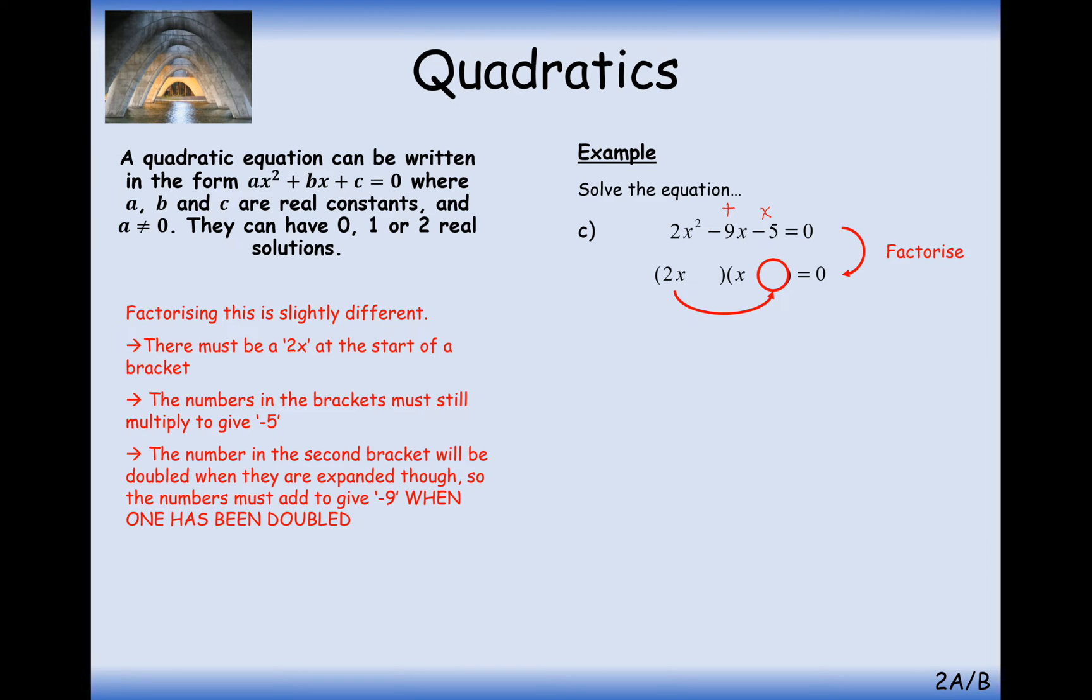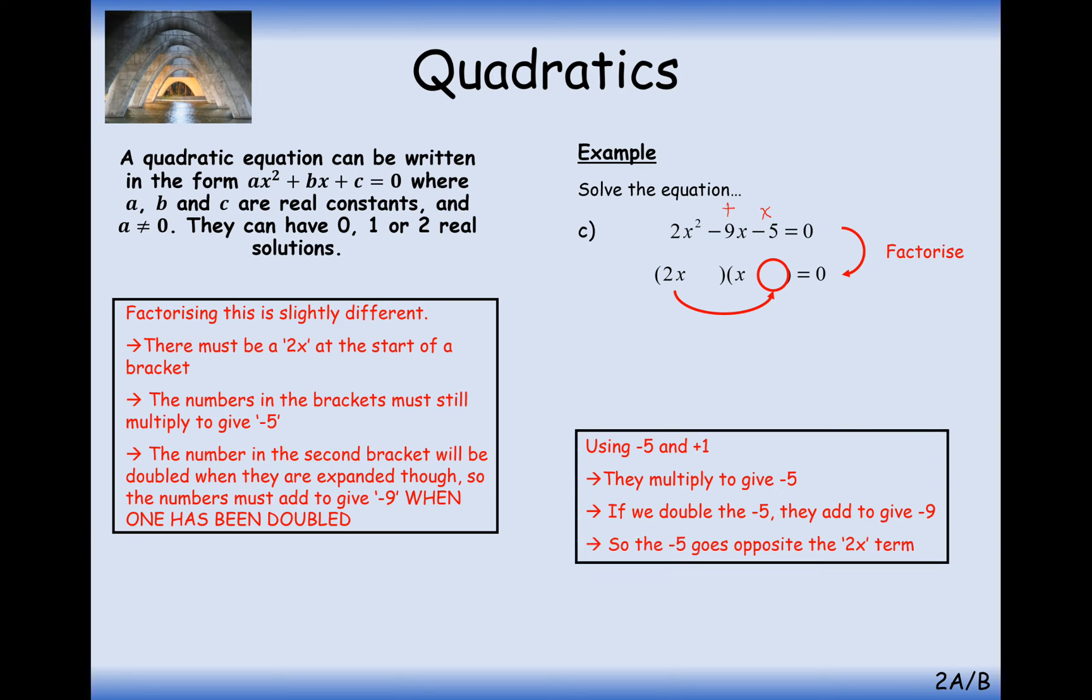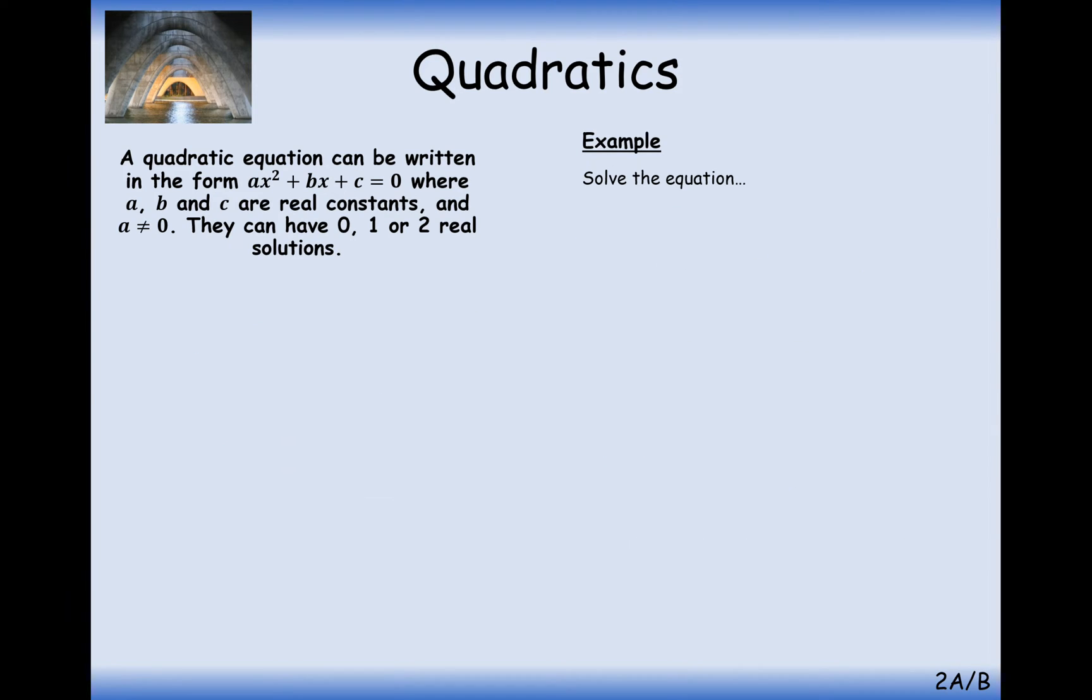In this case here, we need to think about our pairs of numbers. So our pairs of numbers here are going to be 2x plus 1 and x minus 5. And notice here how the 2x would times by the minus 5 to make minus 10, and then we add on the 1 to make it up to minus 9. So here we've got the exact same thing going on. We've got a capital A and a capital B, and they times together to make a zero. So in this case, either 2x plus 1 equals 0, in which case x is equal to minus 1 half, or x equals 5.